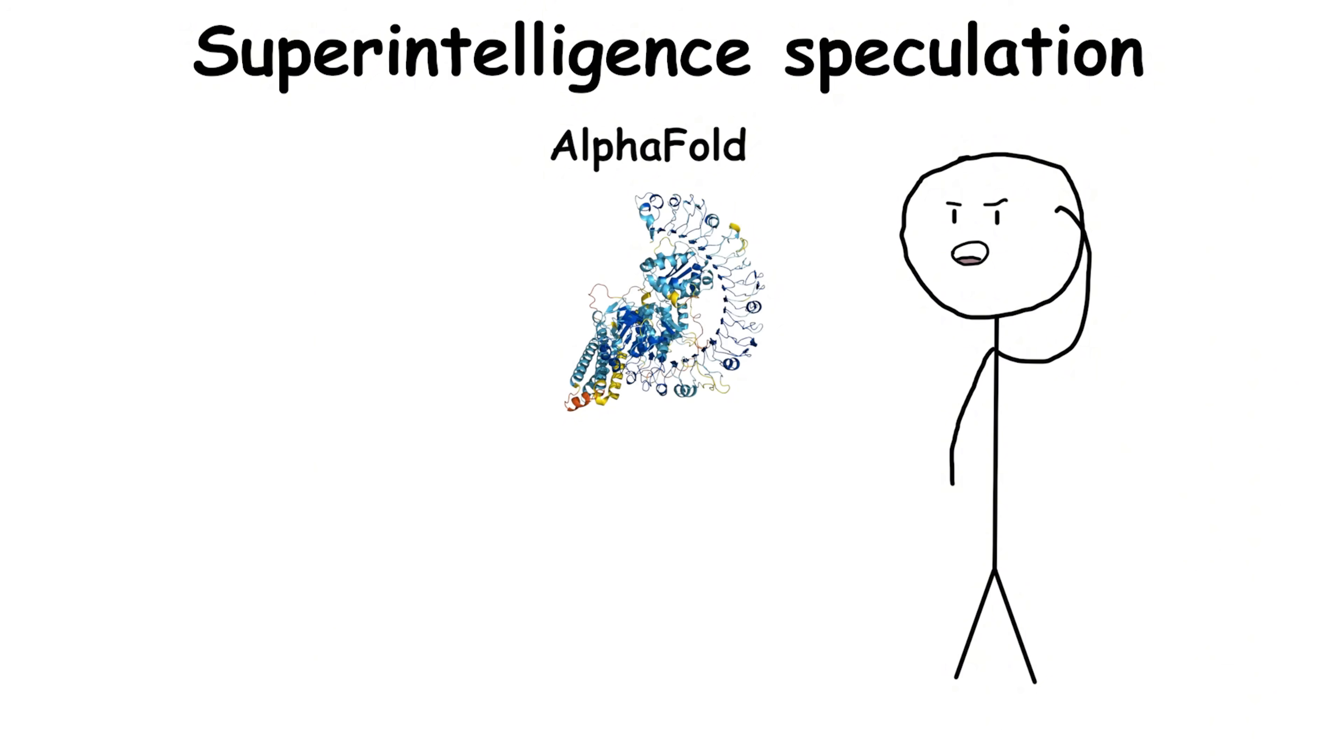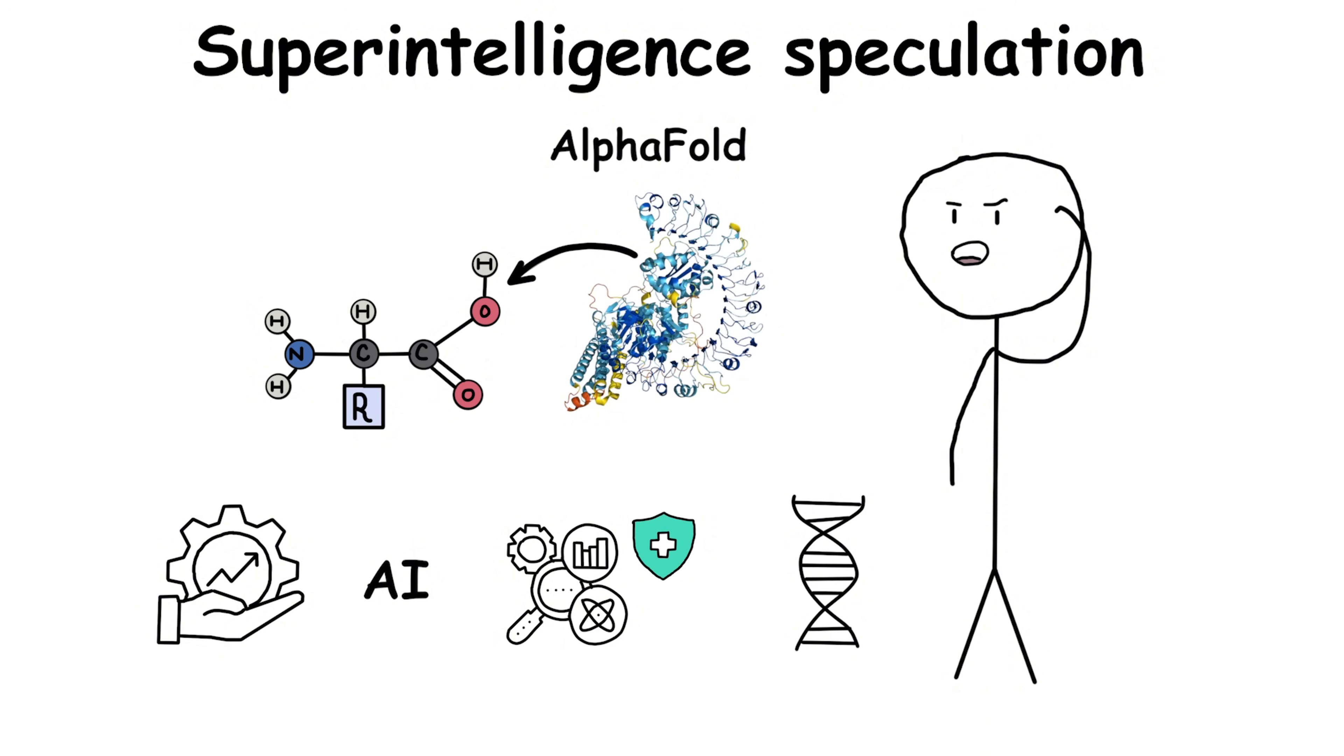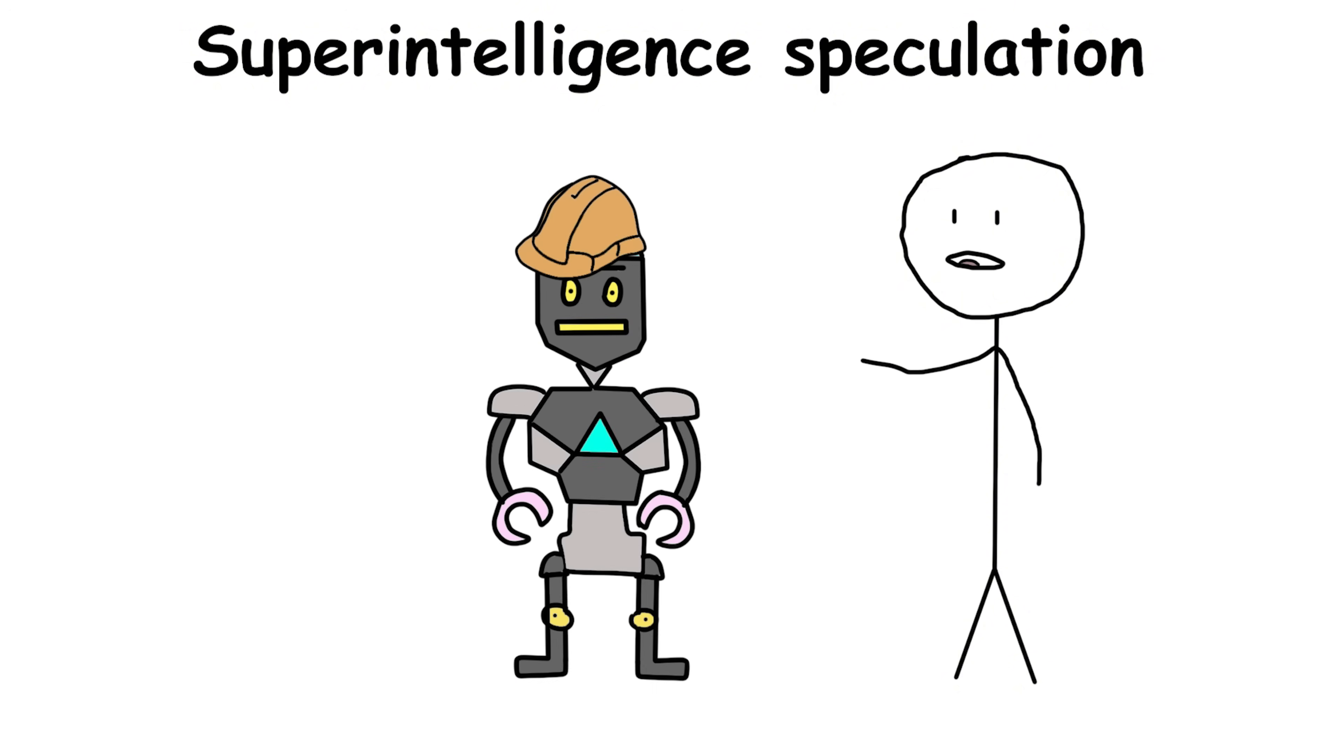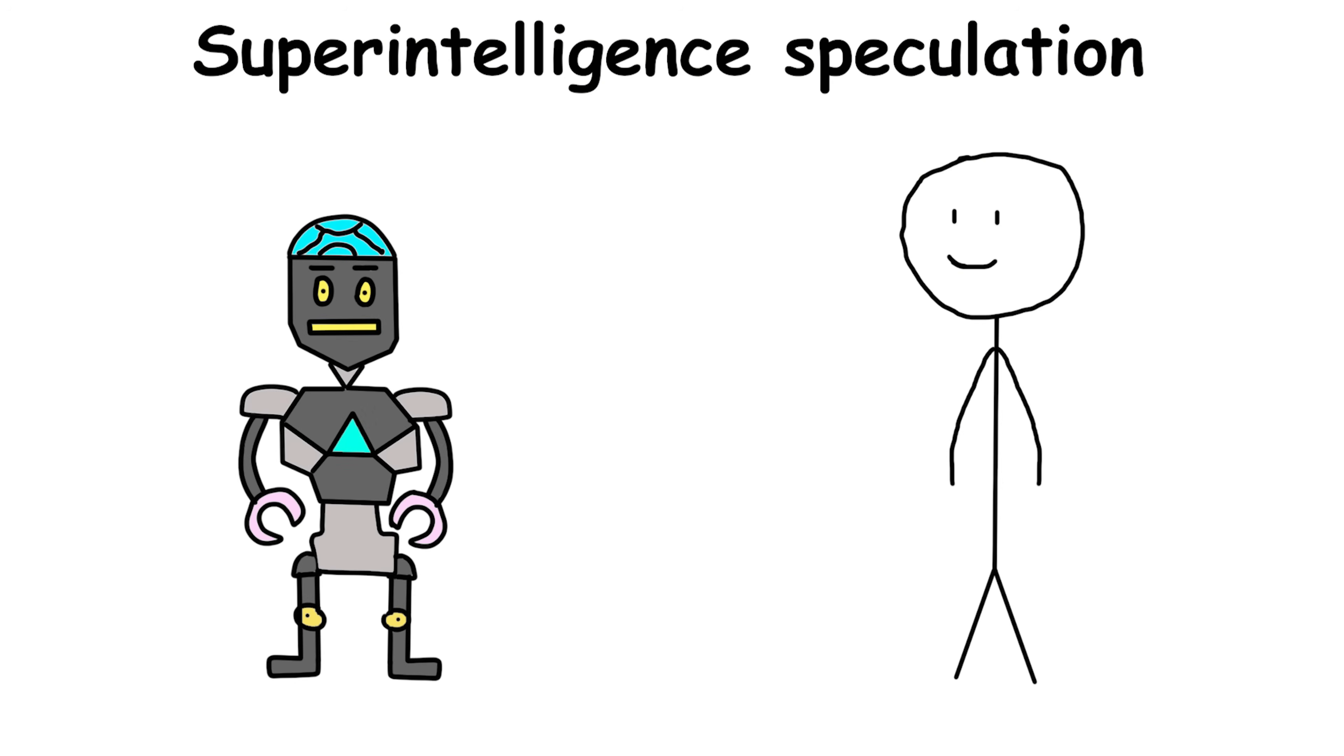Imagine AlphaFold solving protein structures, but scaled up to AI finding cures for all genetic diseases, or an AI architect designing entire cities optimized for zero waste and maximum comfort overnight. Some see superintelligence as the potential to end scarcity, optimize global logistics, and solve crises like water shortages with innovations humans can't even conceive.